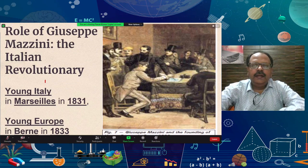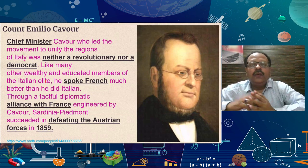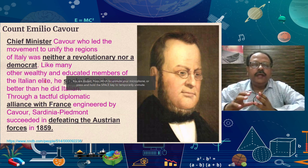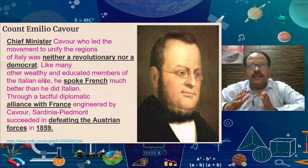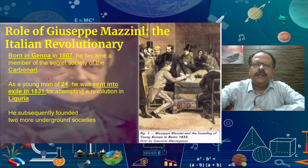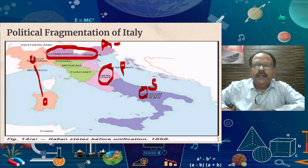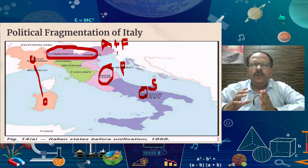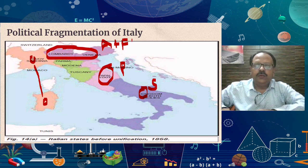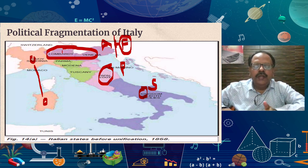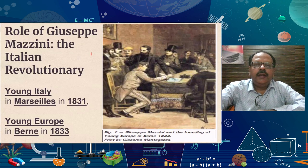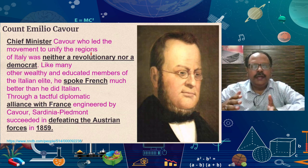Now we will talk about Count Camillo de Cavour. He was the Prime Minister of Sardinia-Piedmont. As we saw on the map, the northern part was under Austria. At that time, Austria and France were friends. By his diplomatic tactics, Cavour separated France from Austria, and in this way he liberated the northern part of Italy from the domination of Austria in 1859.